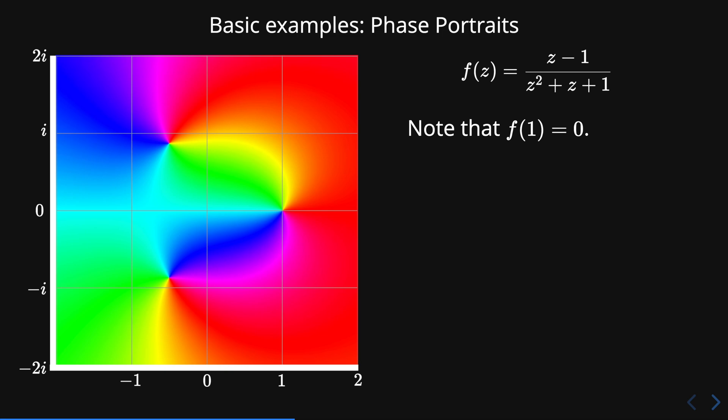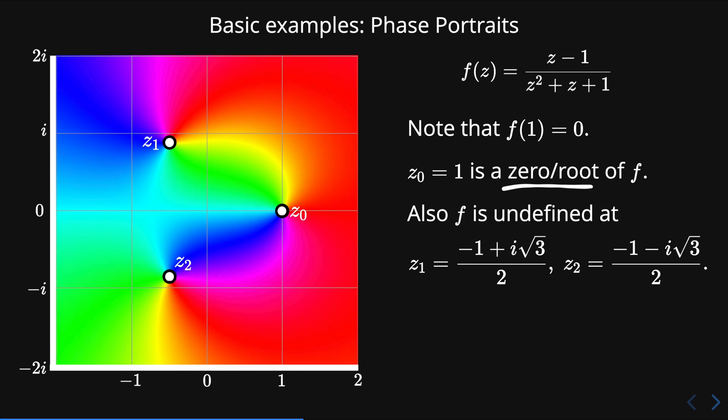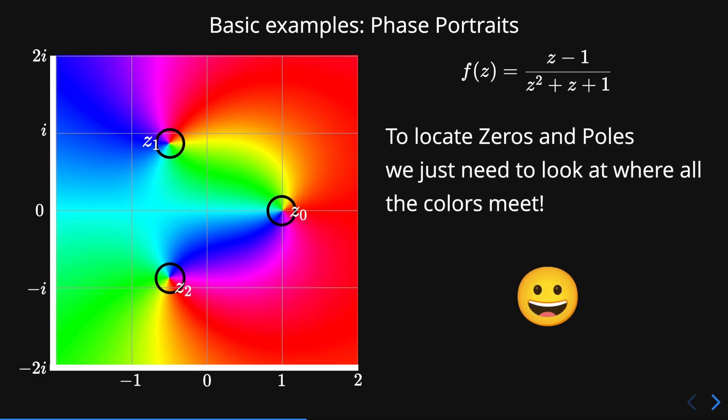Note for example that f evaluated at 1 is equal to 0. We say that 1 is a zero or a root of the function f. Also notice that f is undefined at the complex numbers zeta 1 and zeta 2. These are called poles of the function.